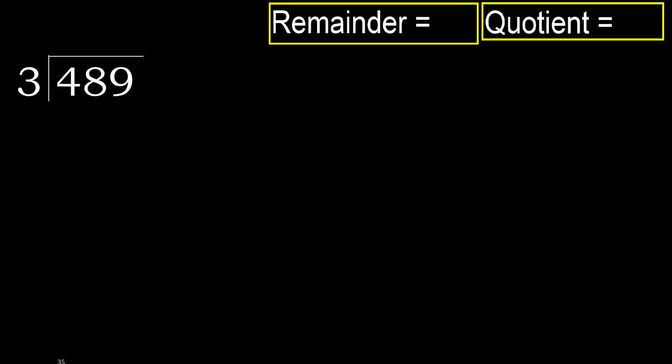489 divided by 3. 4 is not less, therefore we start with 4. 3 multiplied by which number is nearest to 4 but not greater? 3 multiplied by 2 is 6 — 6 is greater. Multiplied by 1 is 3 — it is not greater. Subtract.